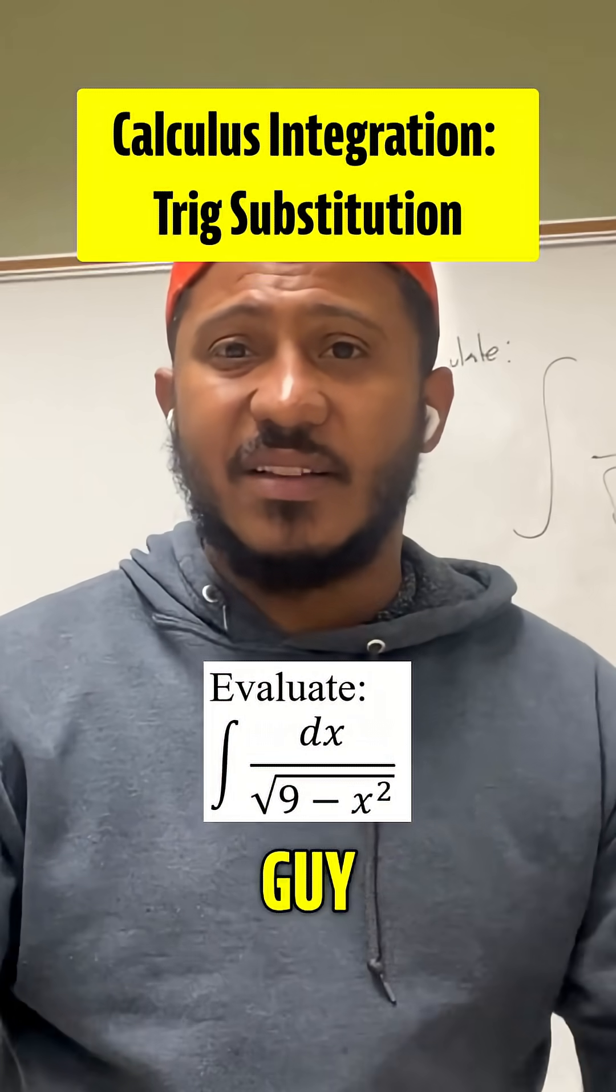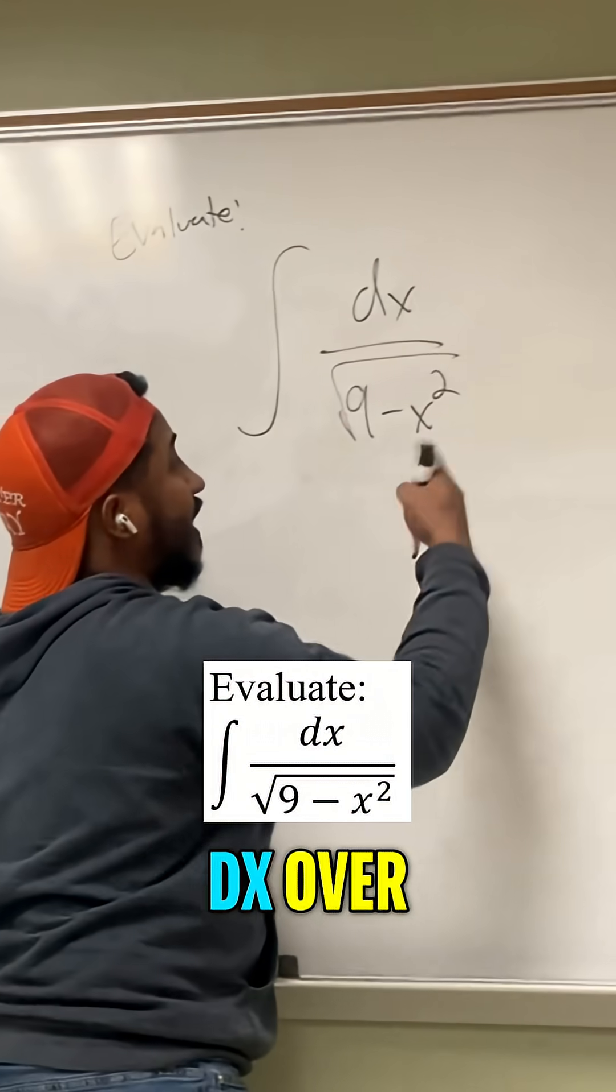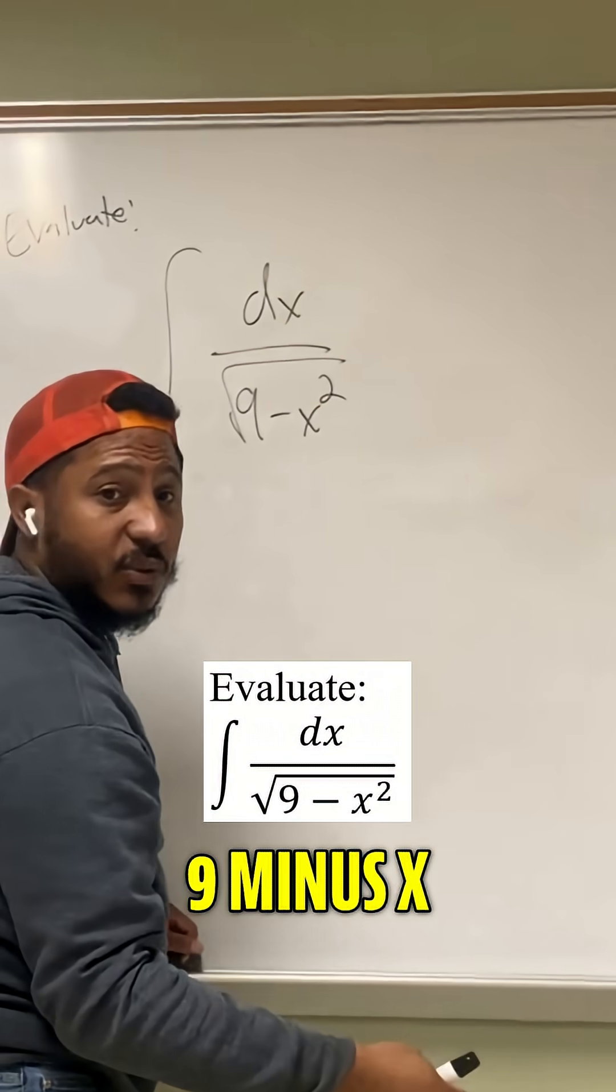Choosing the right substitution is the hardest part for these. Evaluate this integral. We have the integral of dx over the square root of 9 minus x squared.